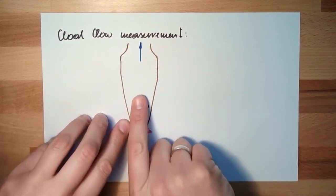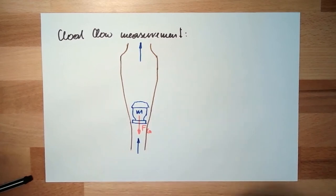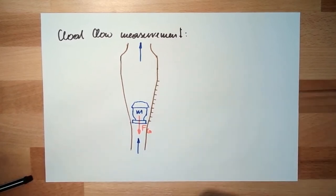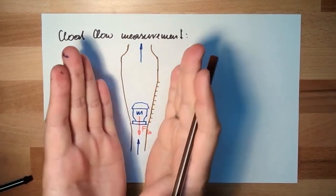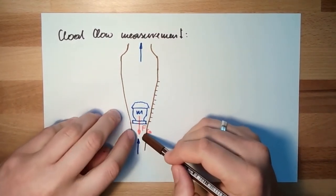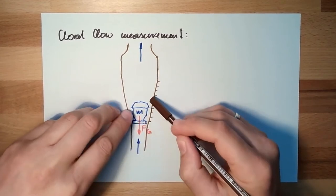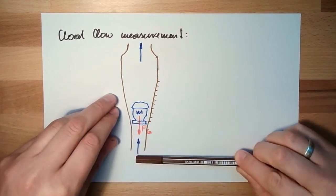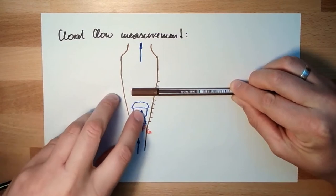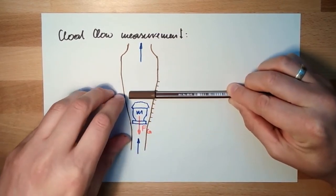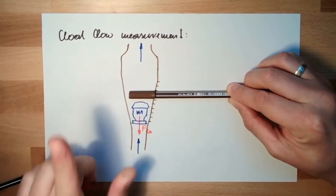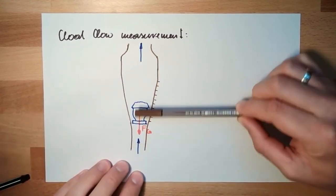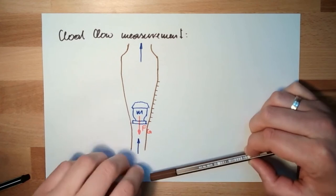This float will start to rise. There's a scale here. Because it's conic, it will get easier for the liquid to pass, so the force of the liquid will drop. The more flow there is, the more this float will rise. When there is equal force in both directions, it will stop. This means the position of the float is indicating the flow rate, and this is what we want to measure. Float flow measurement - very easy.